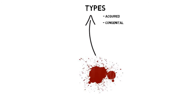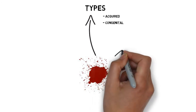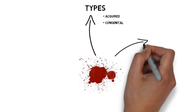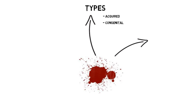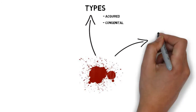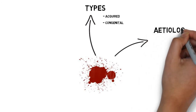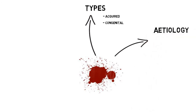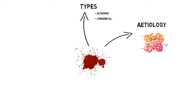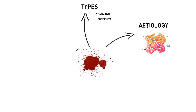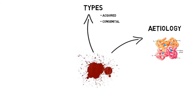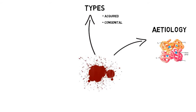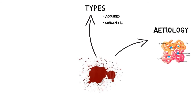Two types of hemoglobin congenital issues are sickle cell anemia and thalassemias, which we'll focus on now. Thalassemias are an inherited mutation of the hemoglobin molecule that causes a decrease in synthesis of the globin chain, either the alpha or beta.